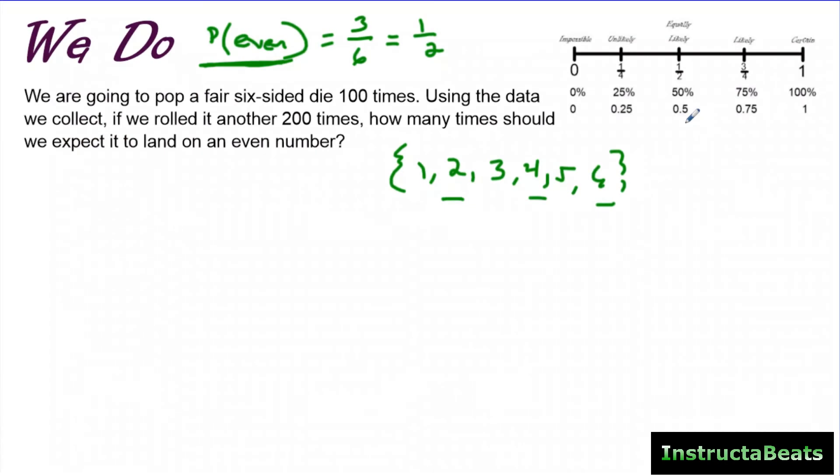So we actually did it 100 times because we did it really quick, as you can see. So we did 100 instead of 50 just to give us a larger sample size. And you could see when we did that, we landed on 2 17 times, we landed on 4 15 times, and we landed on 6 18 times. When you add that together, that's going to give you the total amount of times you landed on an even number. And the funny thing is, that is exactly 50 times.